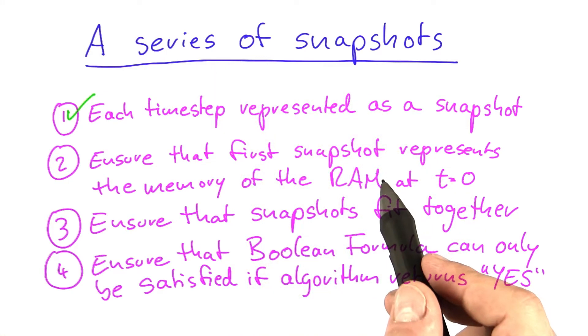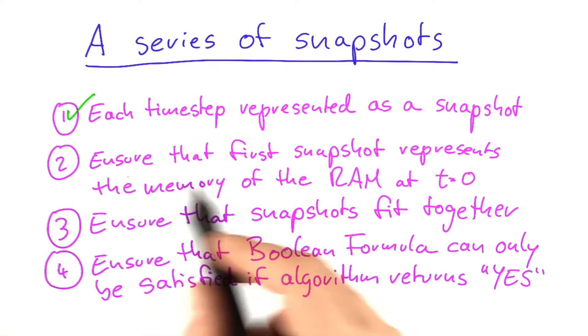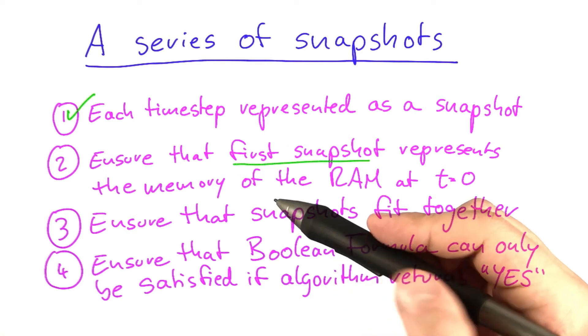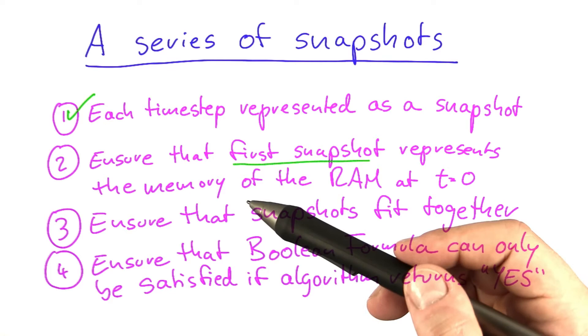The second part is also not that difficult. If we're given an algorithm and an input to that algorithm, we already know what the first snapshot of the RAM is going to look like. The program will start at the first line of the program code and the memory contains nothing but the input itself.